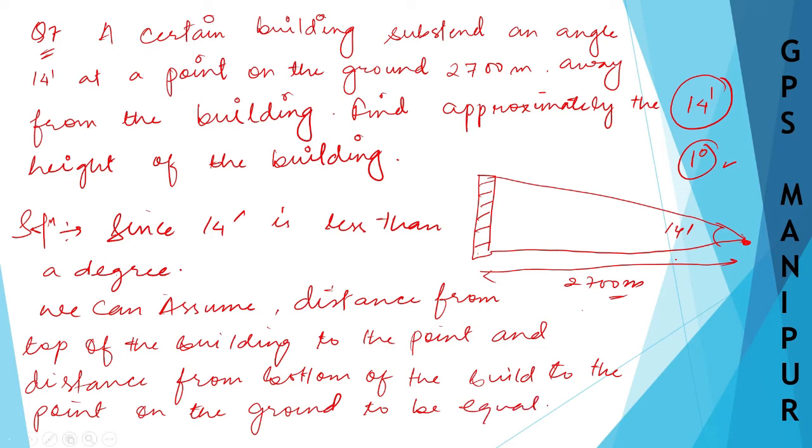What I have said is this angle is too small - it is less than a degree. So it will be something very small. What I can say is this one and this one are equal. Let us assume that. So this one and this one are equal.